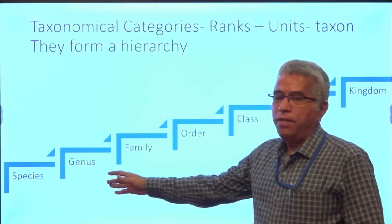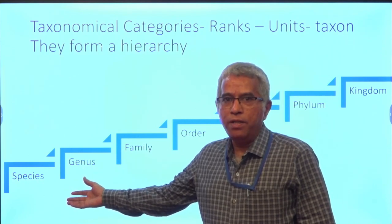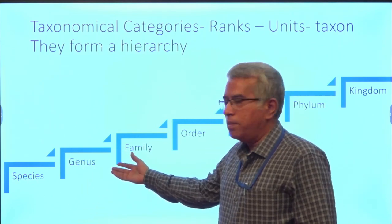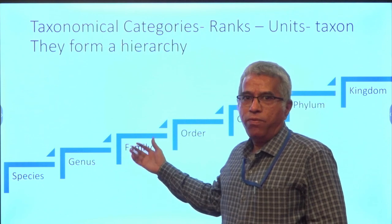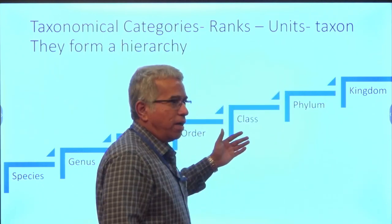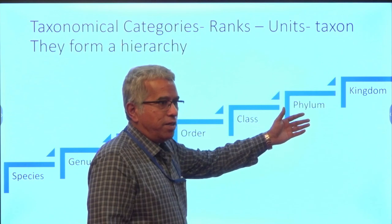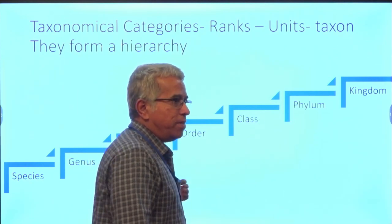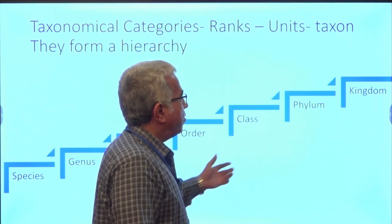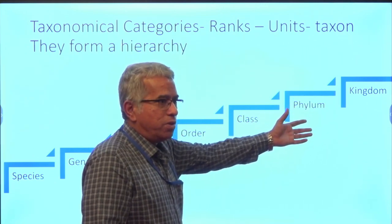Here you can see — let us start with the basic unit, namely species, then genus, family, after that order, class, phylum, and kingdom. So, species is the lowermost taxon, whereas kingdom is the uppermost taxon.